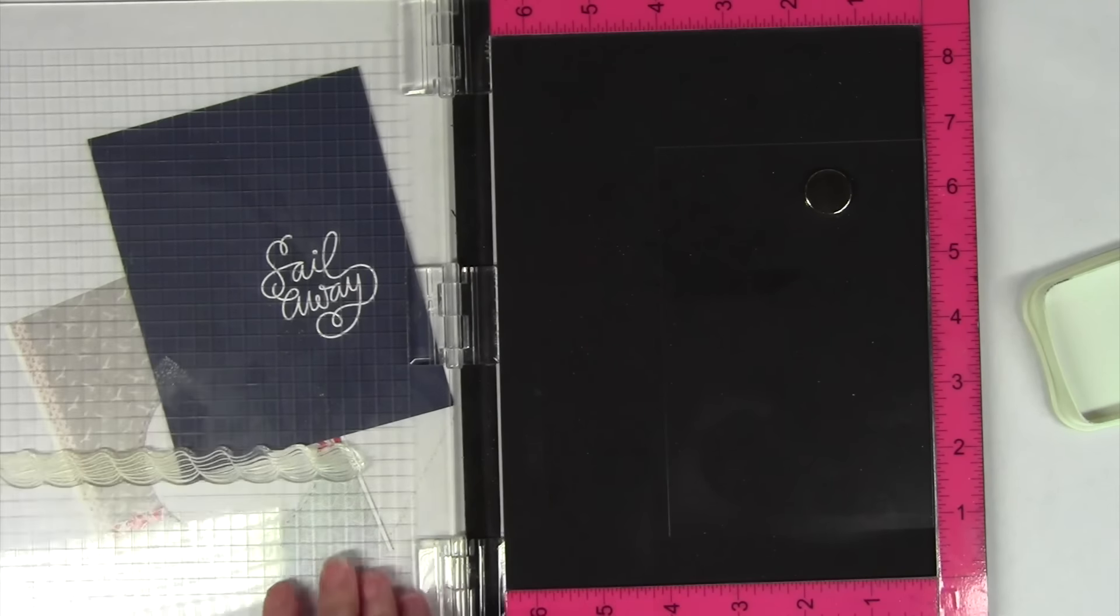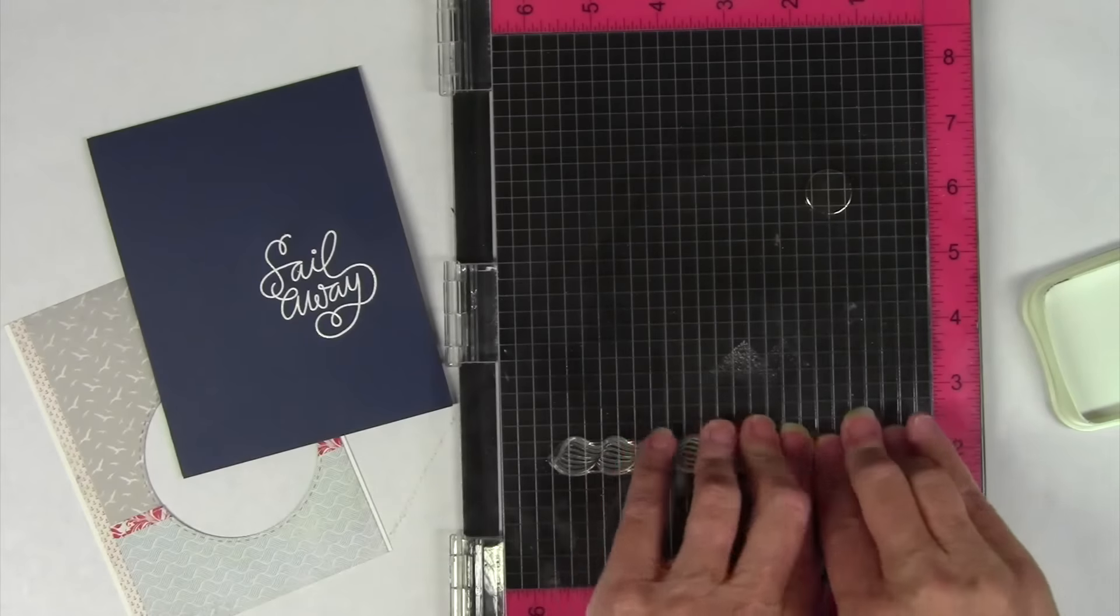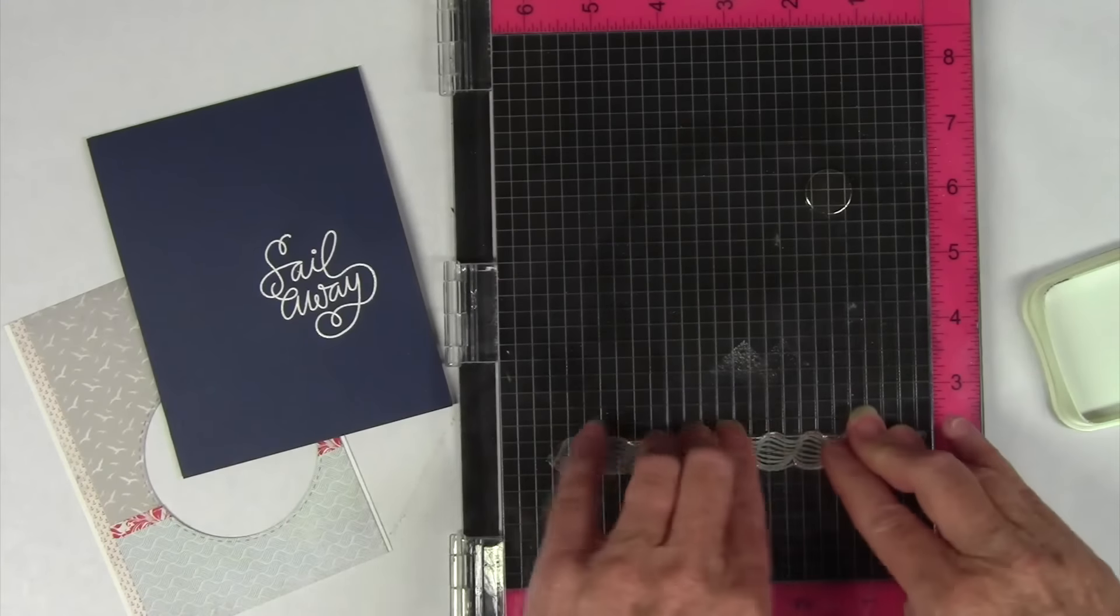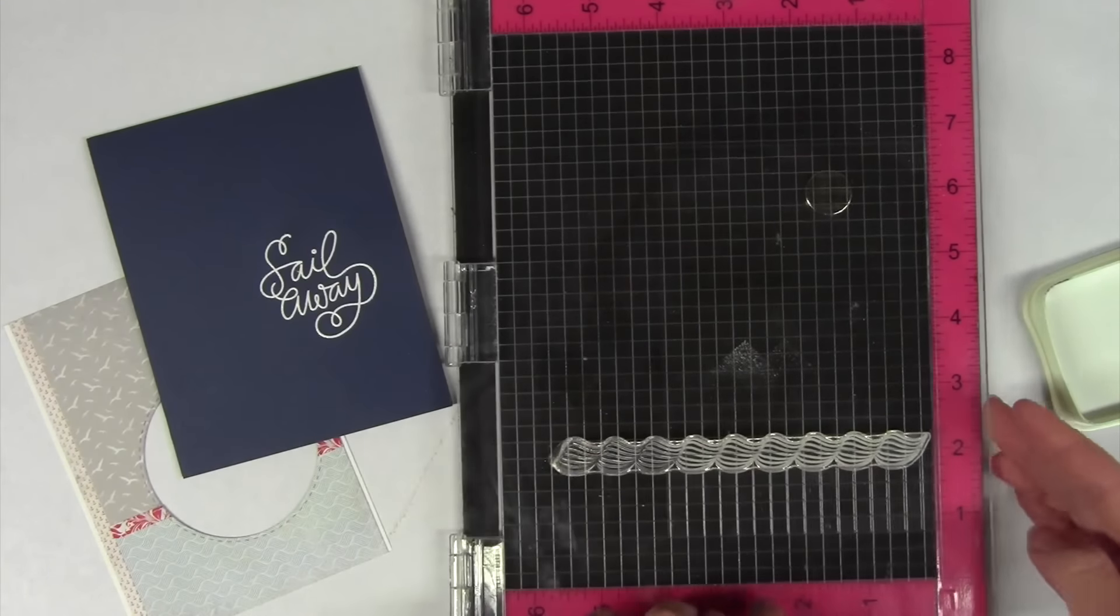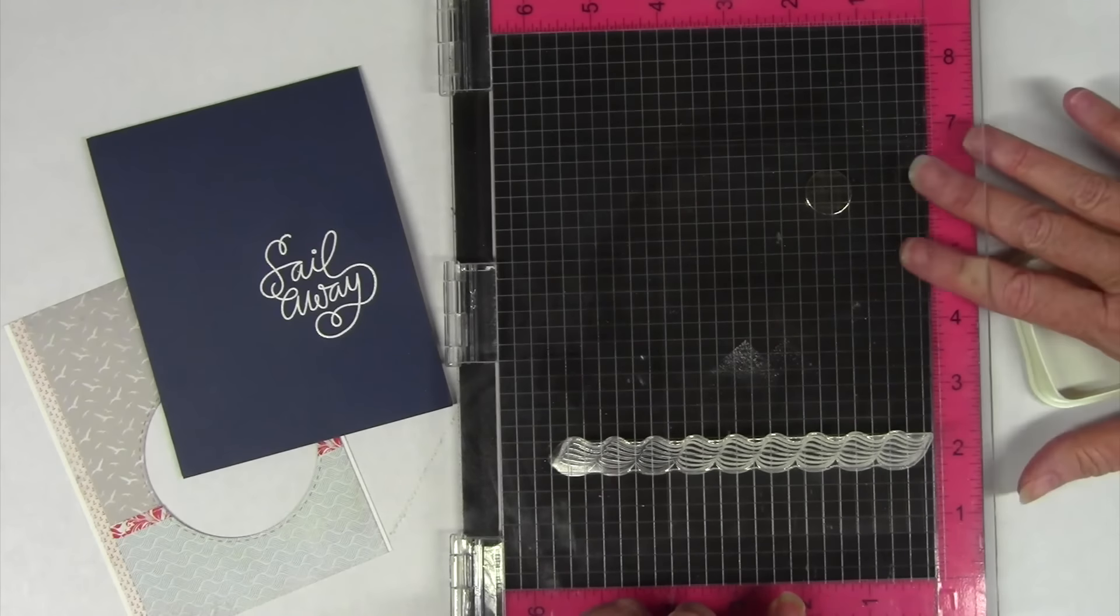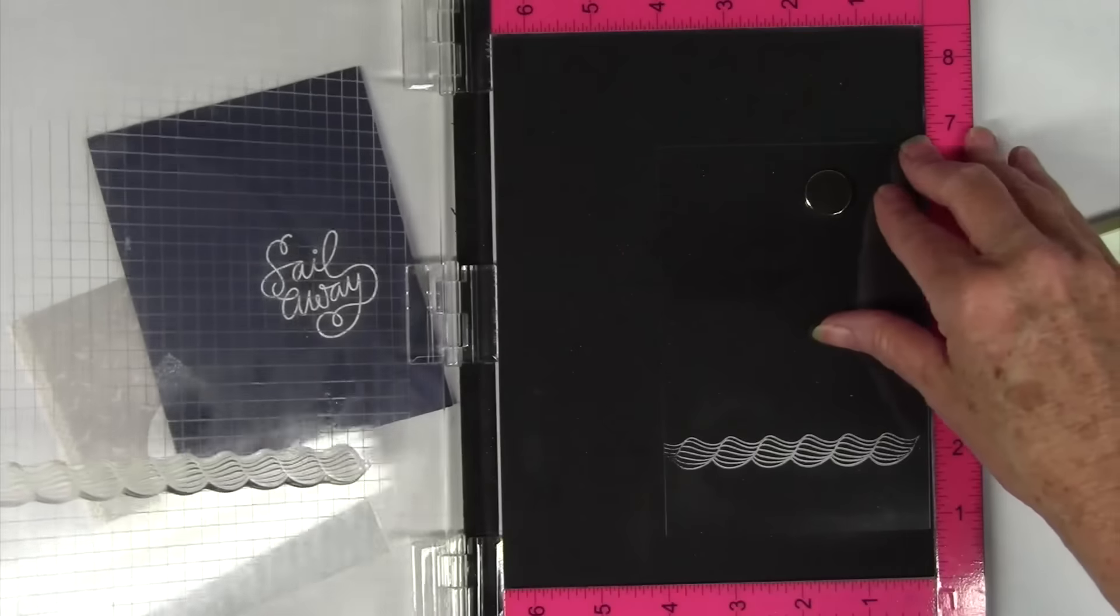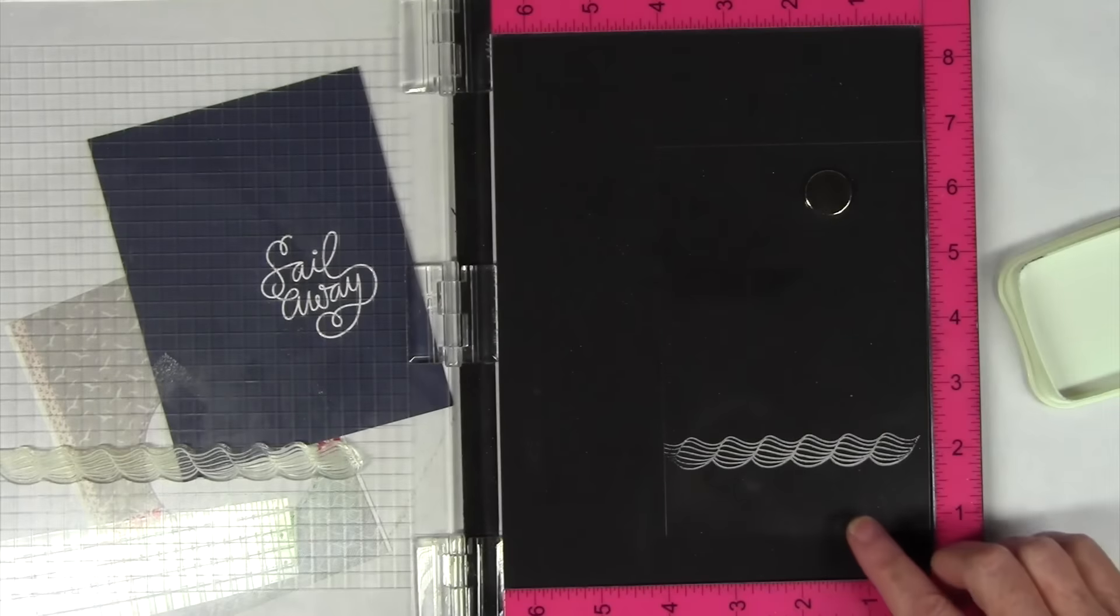I really don't want to get Versamark onto that padding that's on my MISTI. So go ahead and press that down and then I expect it to stick so I'm going to put my finger right underneath and that pulls up and I have a really nice impression. If I didn't of course I could go back and re-stamp.